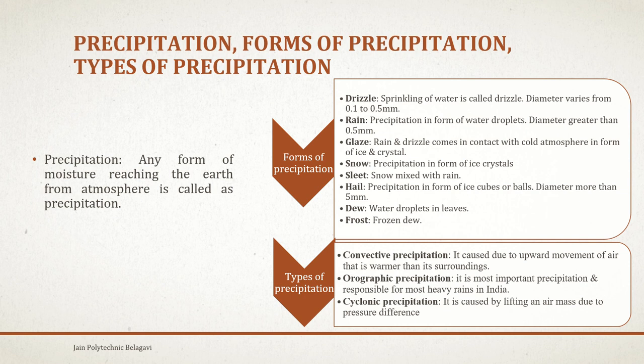Now the types of precipitation: convective precipitation is caused due to the upward movement of air that is warmer than its surroundings. Orographic precipitation is the most important type and is responsible for most heavy rains in India — the monsoon rains in India are categorized as orographic precipitation. Cyclonic precipitation happens during April-May and is caused by the lifting of an air mass due to pressure differences. This ends the hydrology part covering precipitation, forms of precipitation, and types of precipitation.